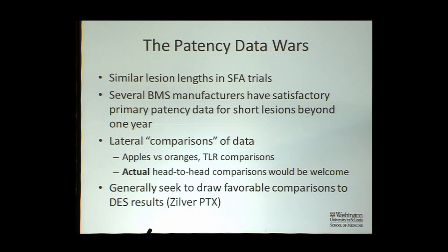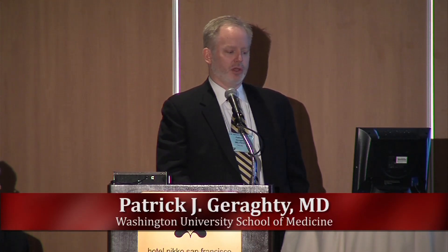Unfortunately, sometimes familiarity breeds contempt. Because the SFA approval trials all deal with the same lesion lengths, we now have an issue with lateral pseudo-comparisons of data — apples and oranges comparisons where someone has a drug-eluting stent or covered stent with a similar lesion length and implies in a publication that theirs is somehow equal or better. These really aren't statistically valid comparisons despite the similarity of lesion lengths. They're not propensity matched. You can do an actual head-to-head comparison — I would welcome it — but you're never going to see it because they're expensive and nobody wants to lose that comparison.